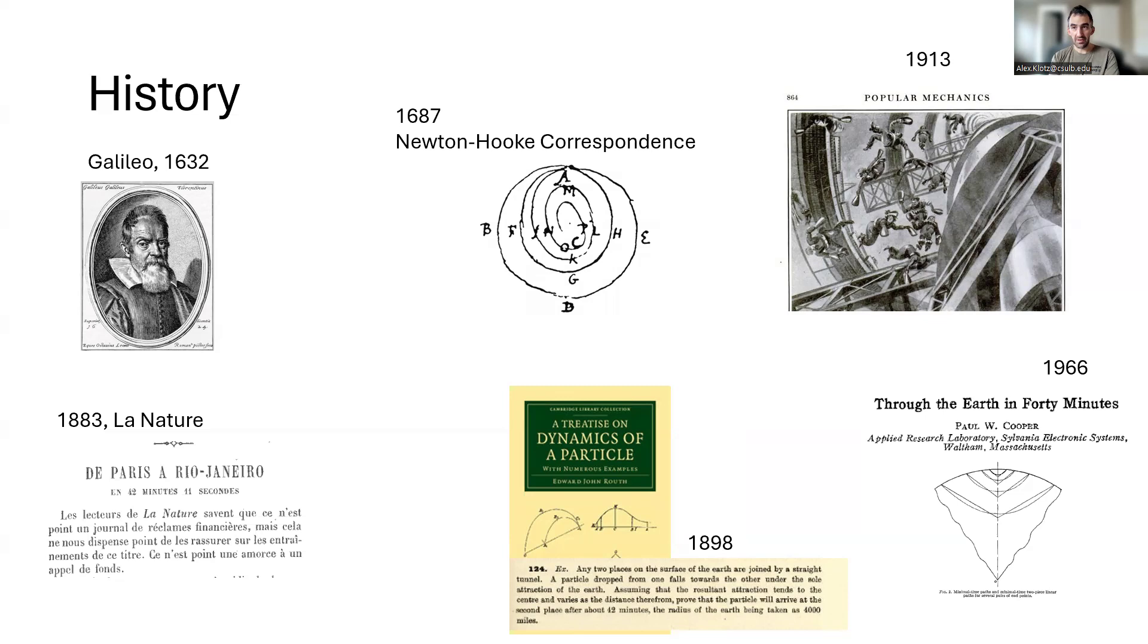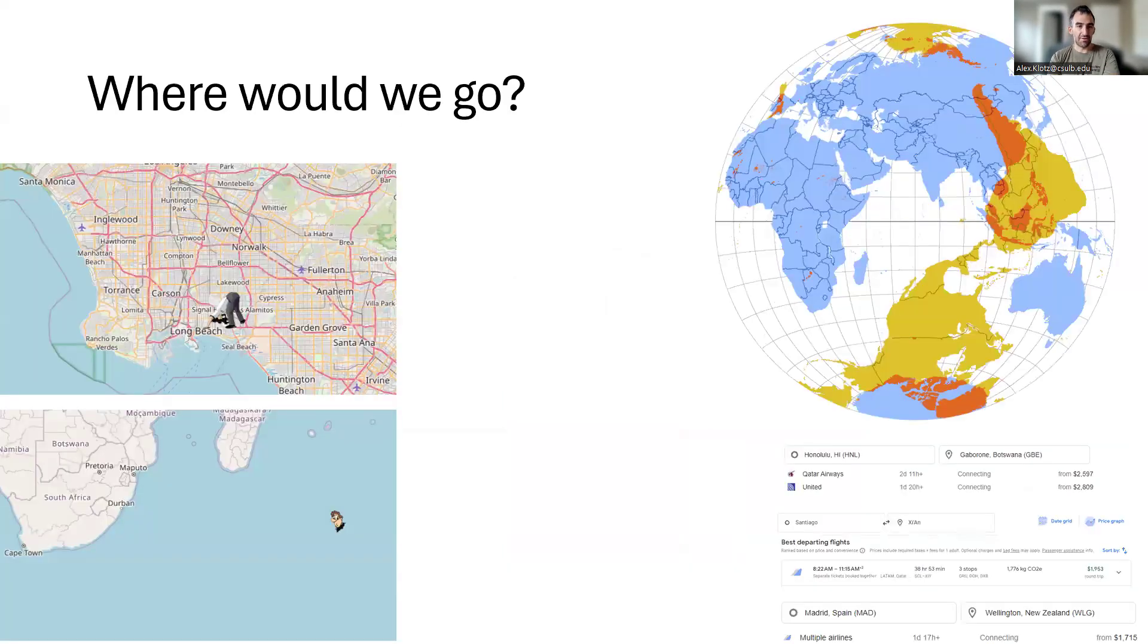So before we figure this out, we want to know where we would actually go. If we went straight down from Long Beach, California, we'd come out in the ocean off the coast of Madagascar. Because the earth is mostly water, things across from land are most likely to be water.